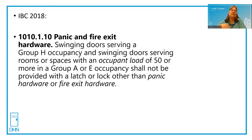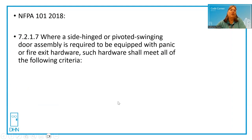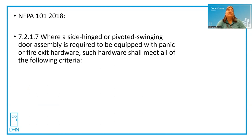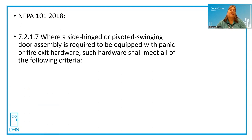Shall is a mandatory requirement. Compared to NFPA 101, Chapter 7 is a fundamental chapter called means of egress. It's kind of like a standard — it will say, if you use panic hardware, then it needs to meet all of the following criteria.